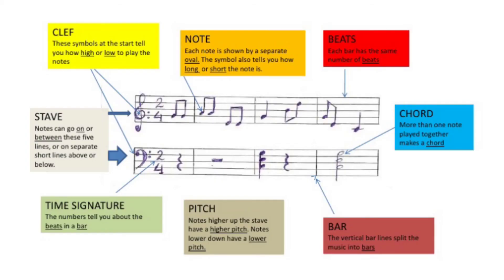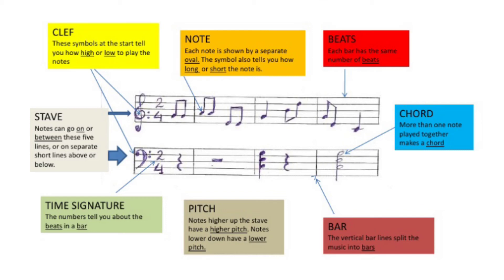Summary. Clef: these symbols at the start tell you how high or low to play the notes. Note: each note is shown by a separate oval, and the symbol also tells you how long or short the note is. Beats: each bar has the same number of beats. Chord: more than one note played together makes a chord. Bar: the vertical bar lines split the music into bars. Pitch: notes higher up the staff have a higher pitch; notes lower down have a lower pitch. Time Signature: the numbers tell you about the beats in the bar.